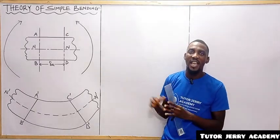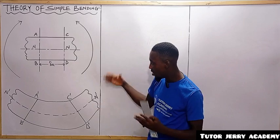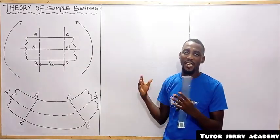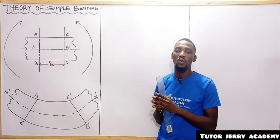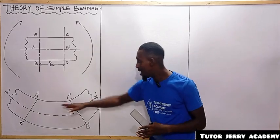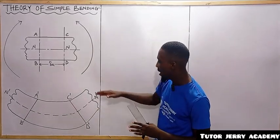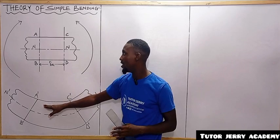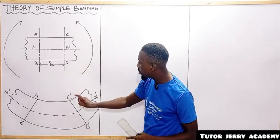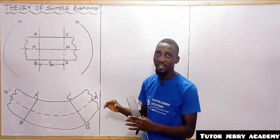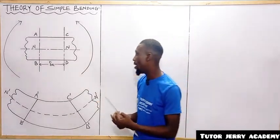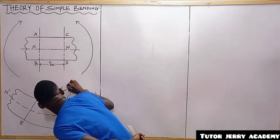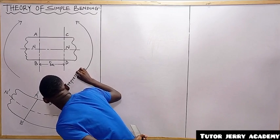Above the neutral layer, due to the decrease in length of the layer, this layer is subjected to compressive stress. Layer A-prime C-prime has been decreased due to the action of bending. So due to the fact that layer AC has been decreased, it is subjected to compressive stresses. This part above the neutral layer is subjected to compressive stresses.